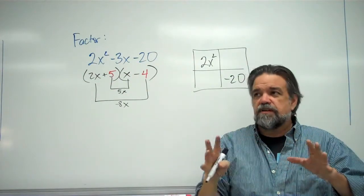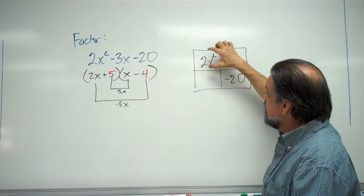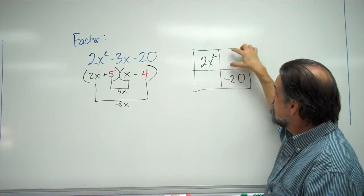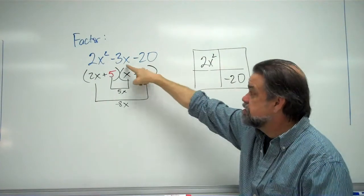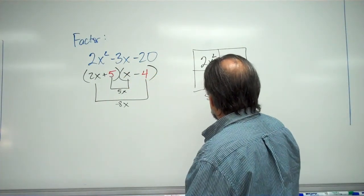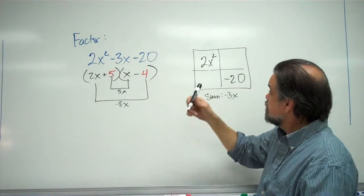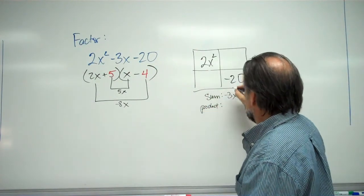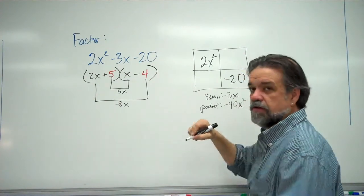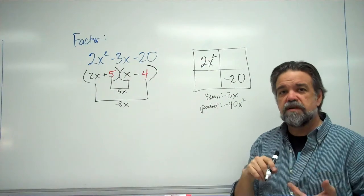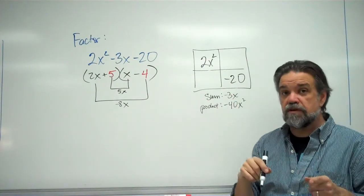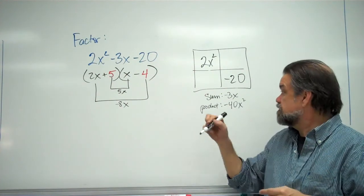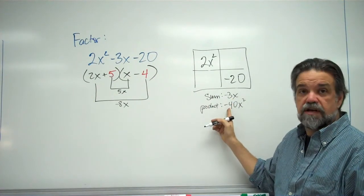Here's the important part. The important part is that, as it turns out, this times this is the same as this times this. Which means I know what the sum of these two terms is. It's negative 3x. My sum is negative 3x. And I know what the product of these two terms is. It's the same as the product there. So my product is negative 40x squared. All right. Well, let's just focus on the coefficients. My sum is negative 3. My product is negative 40. That's going to be negative 8 and positive 5. Because negative 8 plus positive 5 is negative 3. Negative 8 times positive 5 is negative 40.